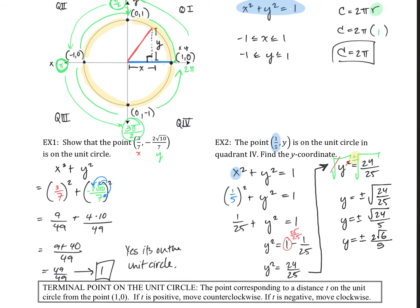Which one do we choose — the positive or the negative? There are two answers. Let's take a look at the other hint they give us: quadrant 4. What do we know about quadrant 4? The x is positive and the y is negative. That is for the values in quadrant 4. And since we're looking for the y value, that must mean we take the negative value for our y. So we take the negative value, and that is our answer: y = -2√6/5.